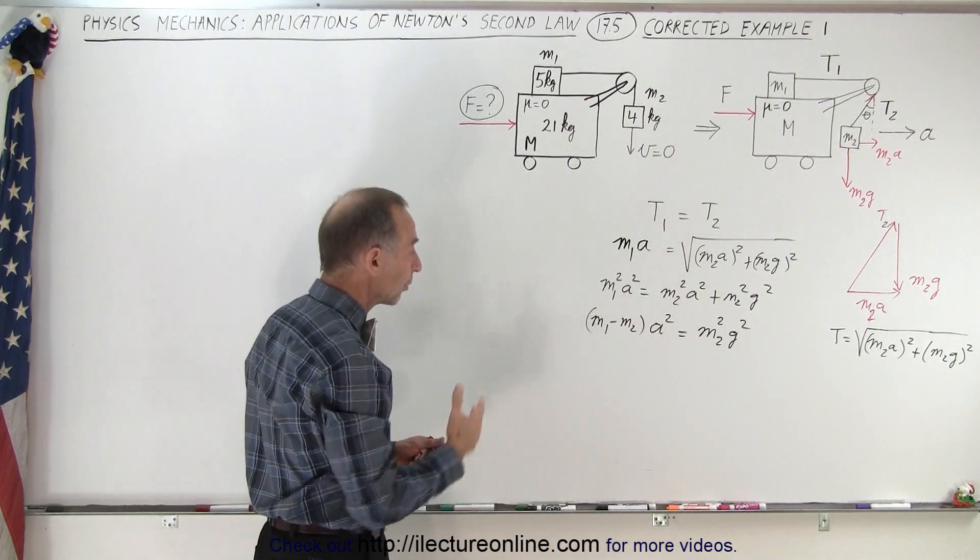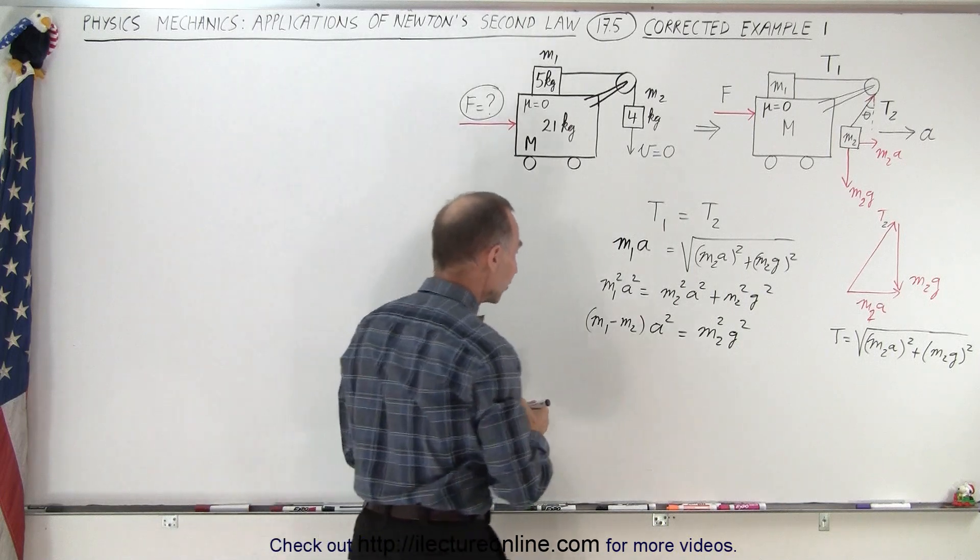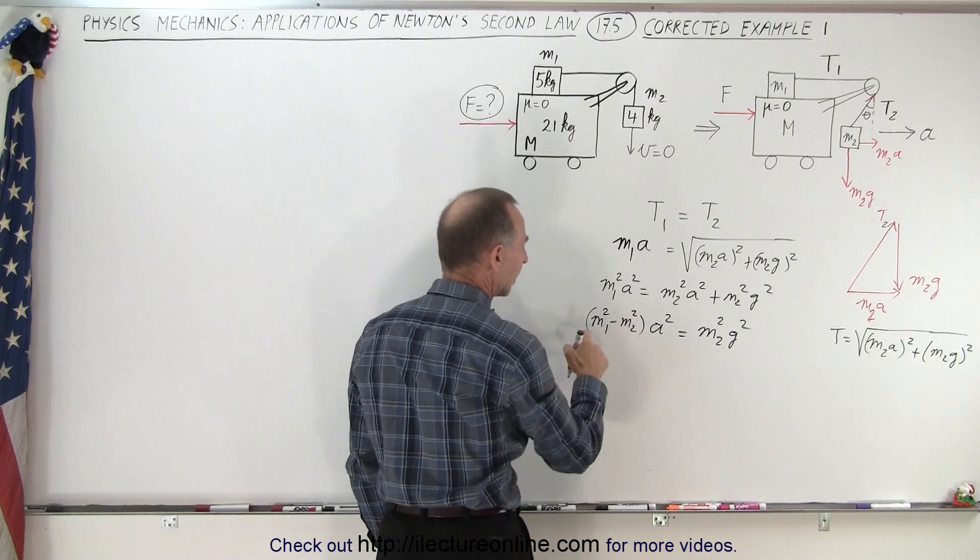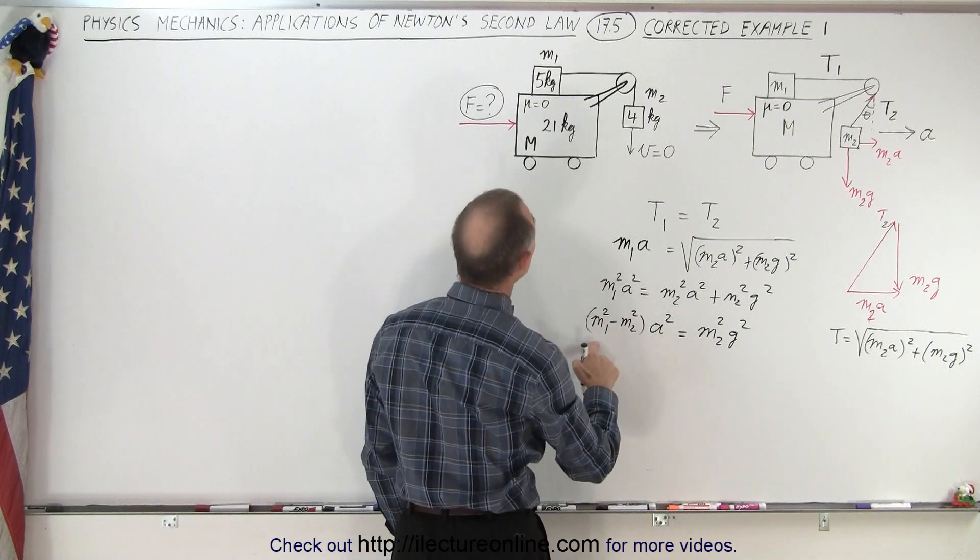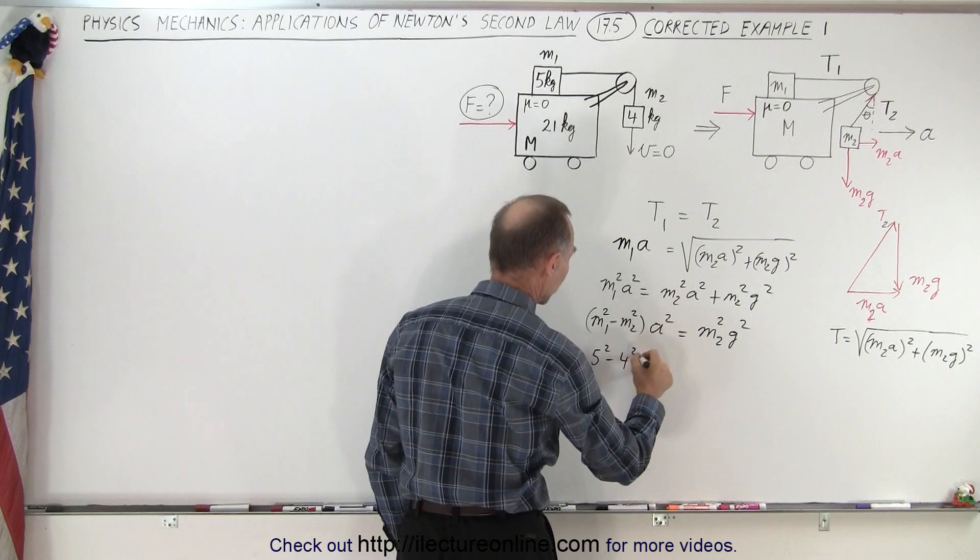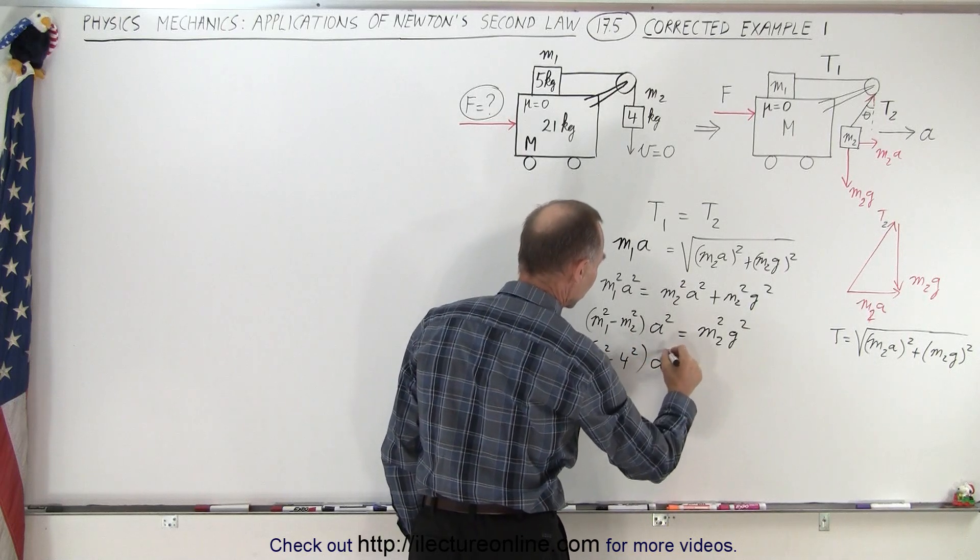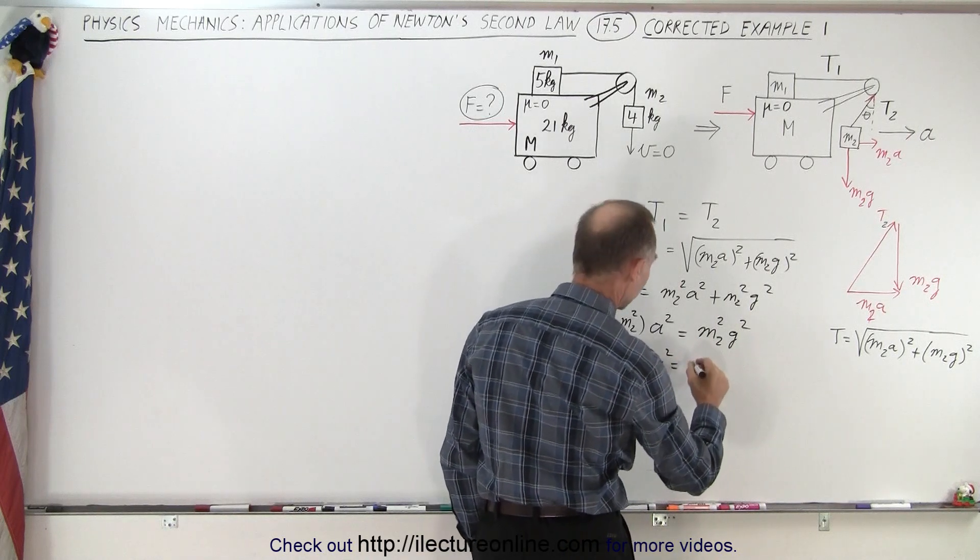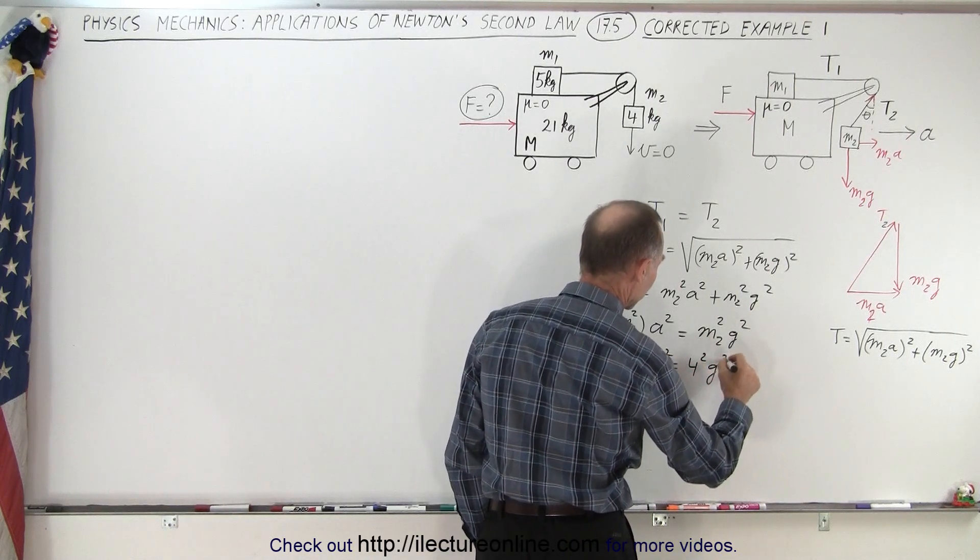Continuing with this, now we can put in some numbers, and of course I should square these as well. I forgot to put the squares on there. Now what we can do is put in the numbers. So m1 squared, that would be 5 squared minus 4 squared times a squared is equal to 4 squared times g squared.